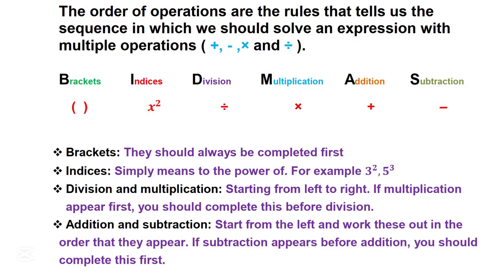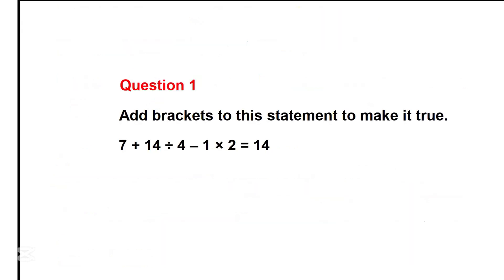We're going to have a look at some examples, a couple of examples. So, we're now going to take our first question here, question number one: add brackets to this statement to make it true. 7 plus 14 divided by 4 minus 1 times 2 equals 14.